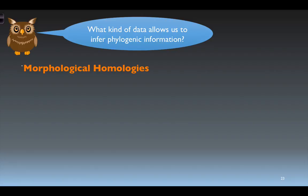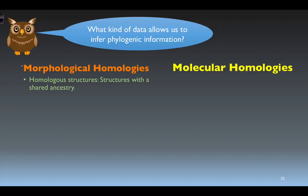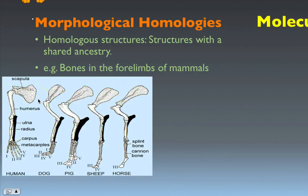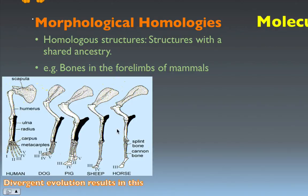What type of data allows us to infer phylogenetic information? The two we look at most closely are morphological homologies and molecular homologies. With morphological homologies, we study homologous structures — structures that have a shared ancestry. Looking at the four limbs of mammals, we find the same collection of bones: scapula, humerus, ulna, radius, carpals, and metacarpals. Dogs, pigs, sheep, and horses all share the same types of bones because of shared ancestry. Divergent evolution results from selective pressures of the environment, which allow one group to move in a different direction.